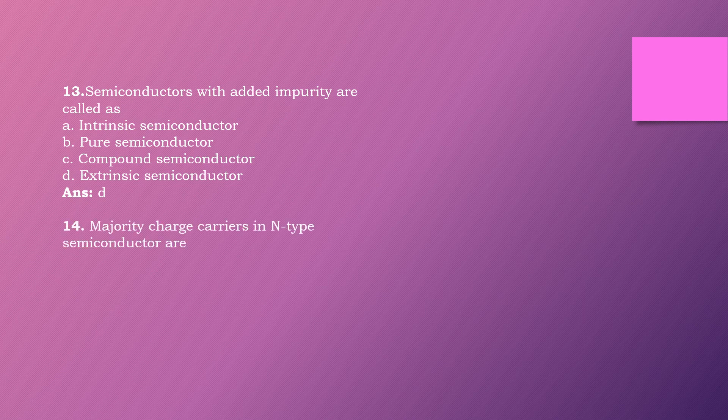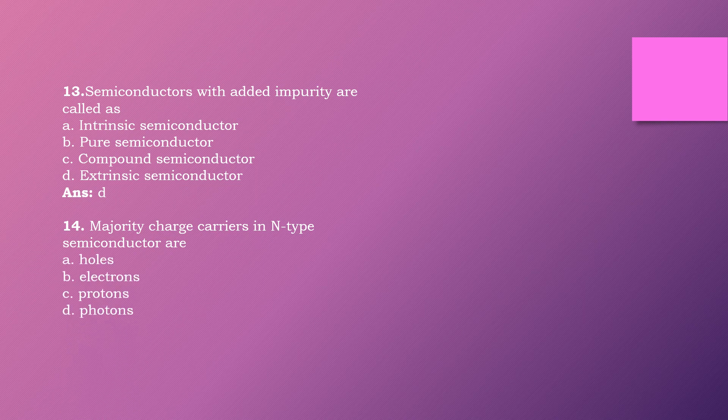Question fourteen: Majority charge carriers in an N-type semiconductor are dash. Options are: holes, electrons, protons, photons. The right answer is option B: electrons.